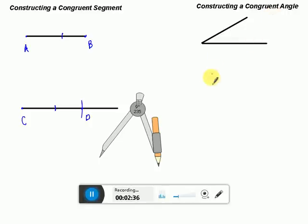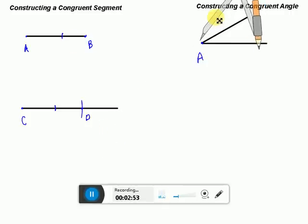Now, let's go ahead and construct a congruent angle. So, you want to start off with the same process. We're going to label this vertex right here and we'll label it A again. That's my vertex A. And I'm going to take my compass and put the pivot point on A.